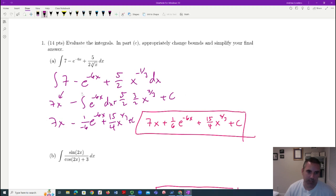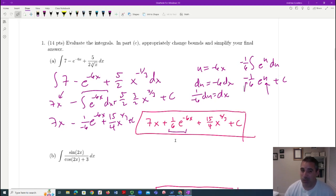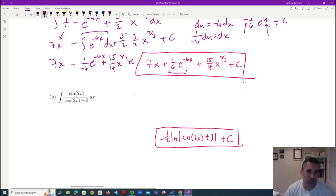If I was doing this myself, I would just write E to the negative six X because there's a negative six there. If I took the derivative, there'd be a negative six in front. I'm trying to go too quickly. This would be 15 fourths X to the two thirds plus C. But if you got stuck on this one, you would do a substitution.